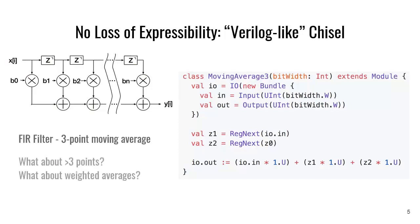The first question is: what if we wanted more than three points? We want a moving average of four or five — maybe that would be a good parameter. Second: what about weighted averages? What if I wanted these numbers to be different? What I really want is a generic FIR filter, not this specific instance of an FIR filter.